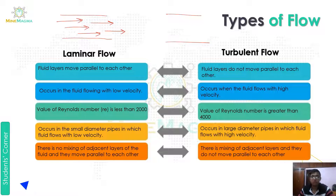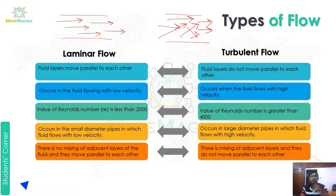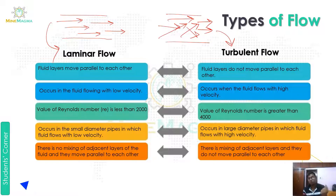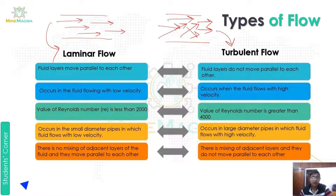Turbulent flow mein woh ek alag pattern se flow karte hain — koi bhi parallel move nahi karte, ek doosre se tukraate rehte hain aur ek aisi flow ke saath chalte hain. Laminar flow occurs in fluid flowing with low velocity — jab low velocity hoti hai tab laminar flow hota hai. The value of Reynolds number for laminar flow is less than 2,000 and for turbulent flow it is greater than 4,000. Reynolds number ek dimensionless number hai jo hum fluid mechanics mein use karte hain.